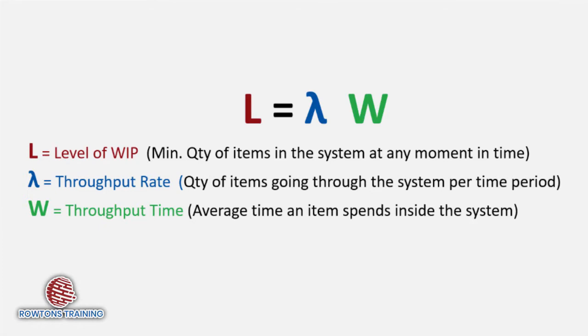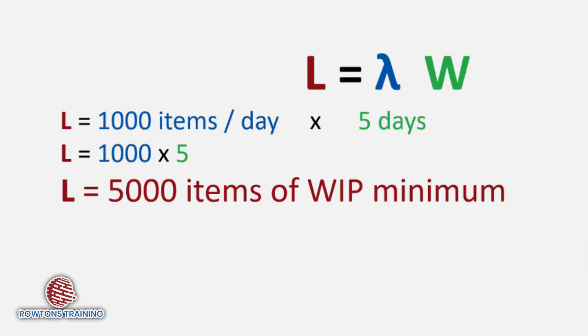Okay, did you get it? Let's find out. L equals lambda W. L, the level of work in progress, equals lambda, the throughput rate, that's our 1,000 items per day, multiplied by our throughput time. That, in our case, was 5 days. 1,000 per day times 5 days equals 5,000. There must be a minimum of 5,000 widgets in our system at any one time for this system to be working.